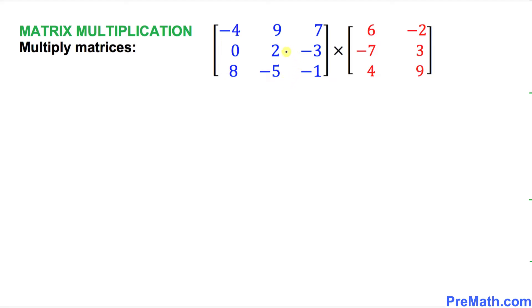You can see that these matrices have different dimensions. The left-hand side matrix has the dimension 3 rows and 3 columns, 3 by 3. And the right-hand side, the red matrix, the rows are 3 and the columns are 2.